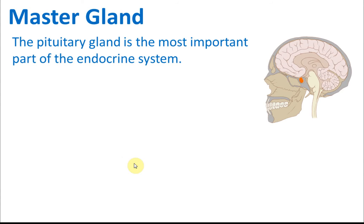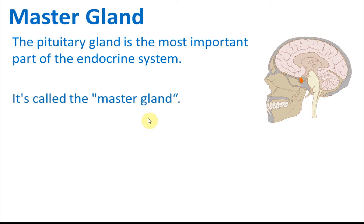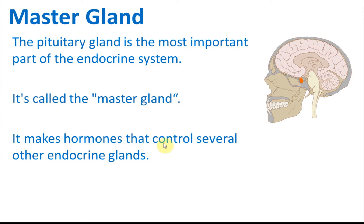Because the pituitary gland controls the other glands, it is called the master gland. It is the most important part of the endocrine system. Remember this for the exam — they may ask which gland is the master gland. The answer is the pituitary gland, which is a very small gland within the brain.